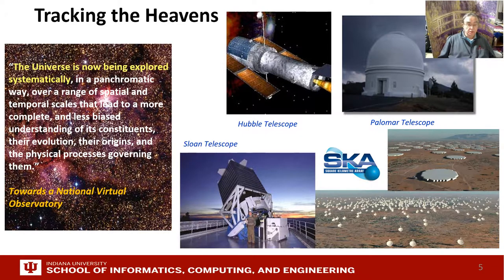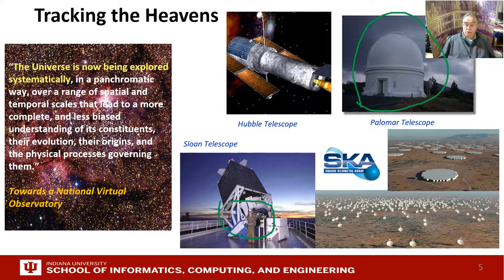Here is the first of a couple of slides on astronomy. We have pictures of the square kilometer array, in different wavelengths. There's also the classic large telescope Mount Palomar, the Hubble Space Telescope, and the Sloan telescope, which is aimed at producing more data very fast and is meant to cover a wide range of topics.